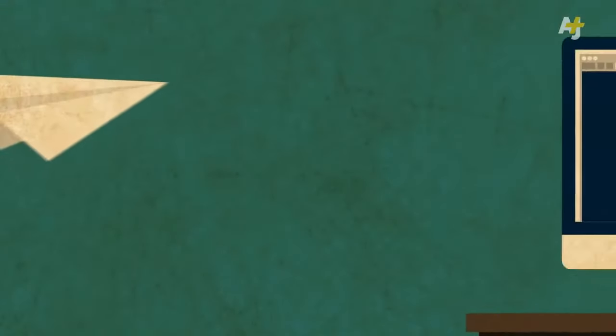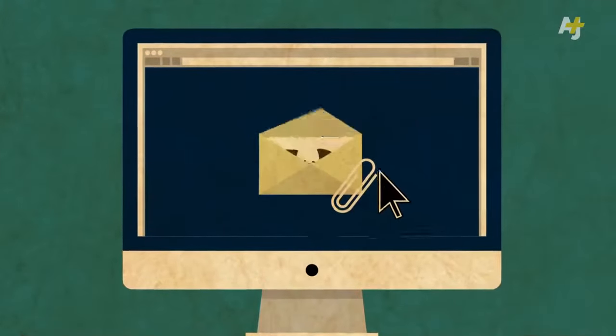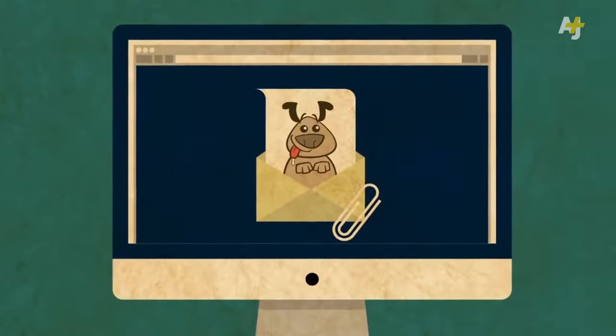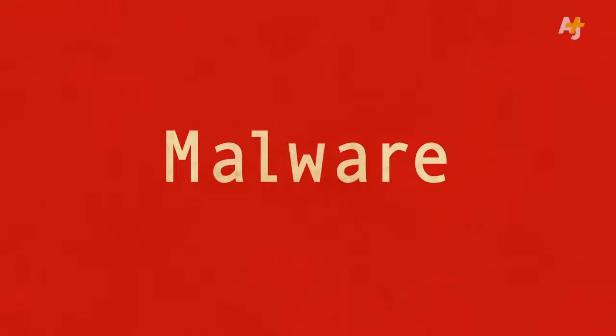The most common way your computer can get owned is if you get tricked into running a program. That can happen if you click on an email attachment that appears innocent but is actually malicious. Malicious software is called malware.